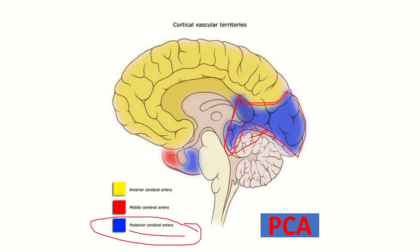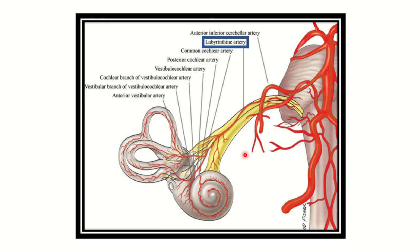Because the cerebral cortex controls the opposite side of the body, if occlusion of the posterior cerebral artery occurs, the opposite side's vision will be lost. The posterior cerebral artery supplies the occipital cortex, and the occipital cortex controls the contralateral visual field.